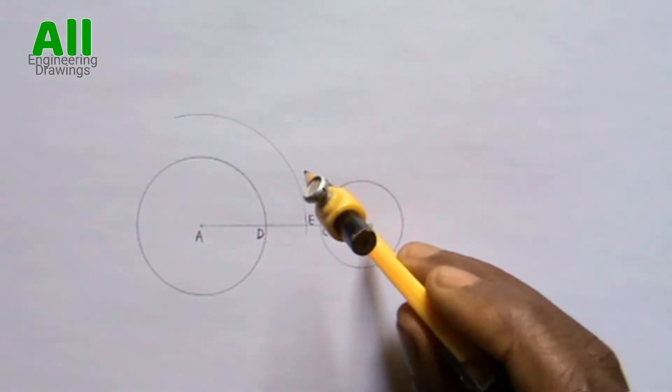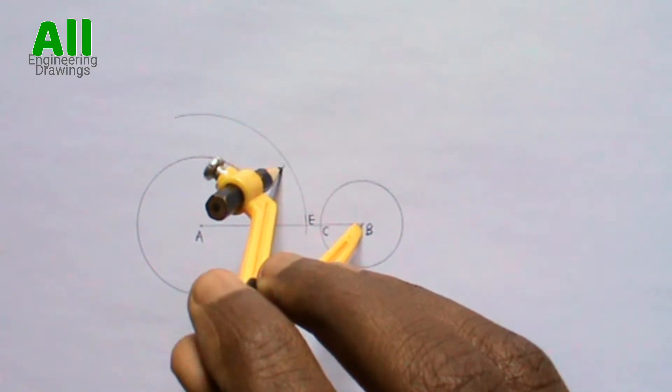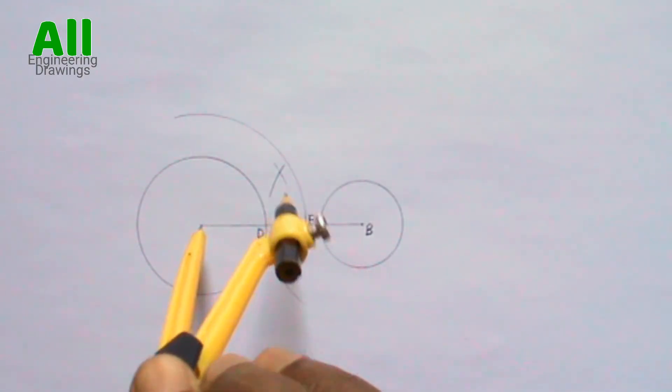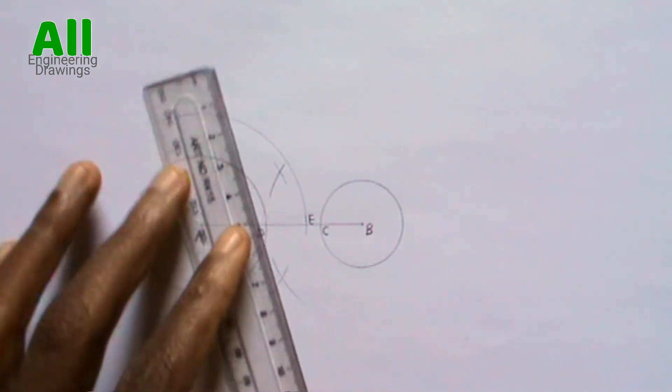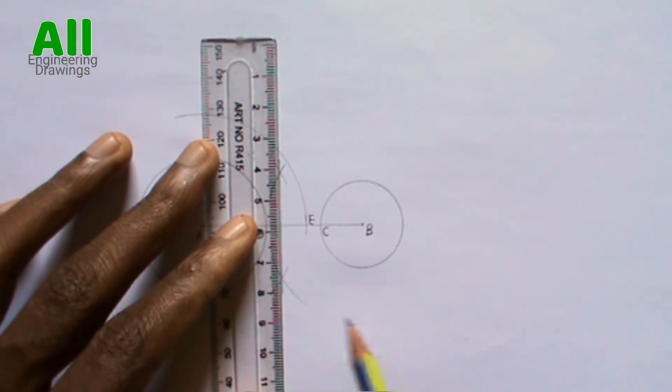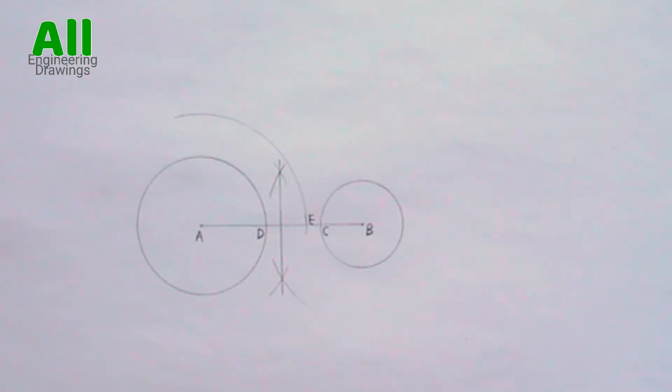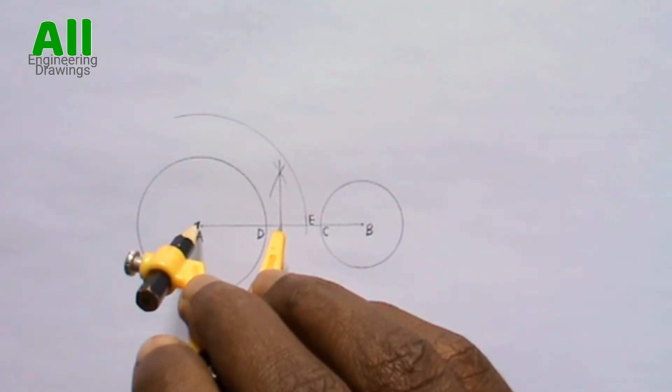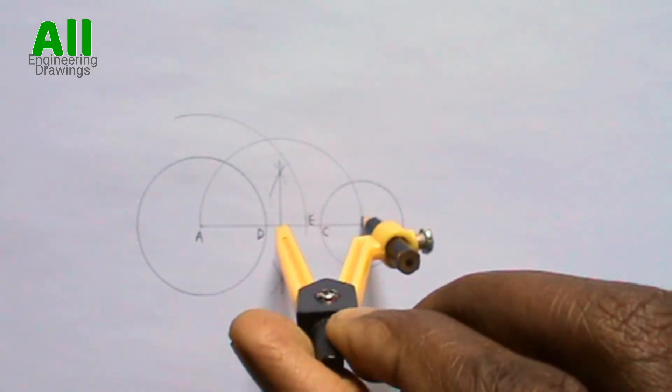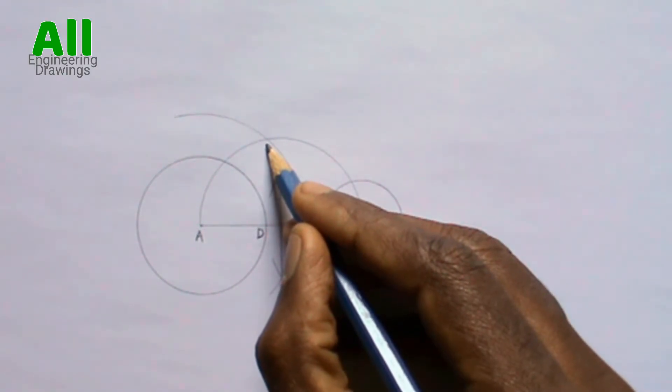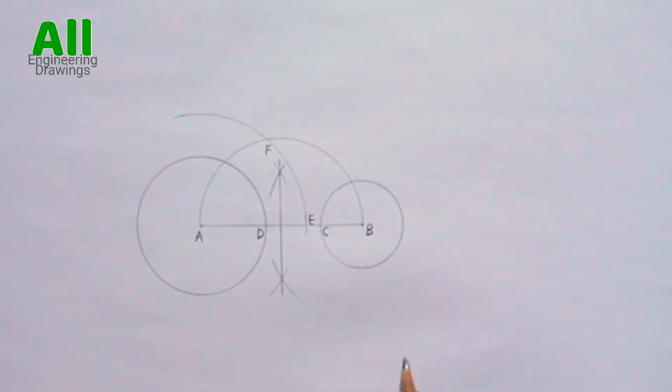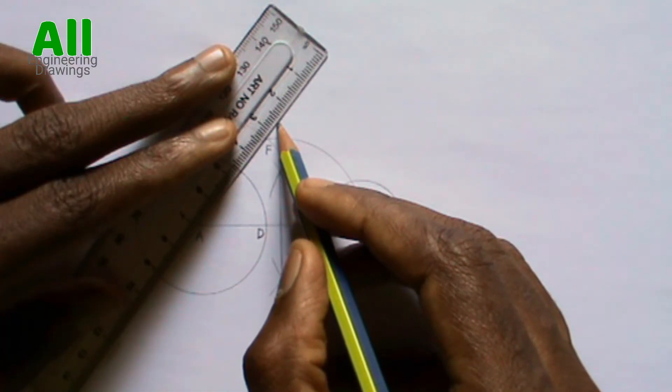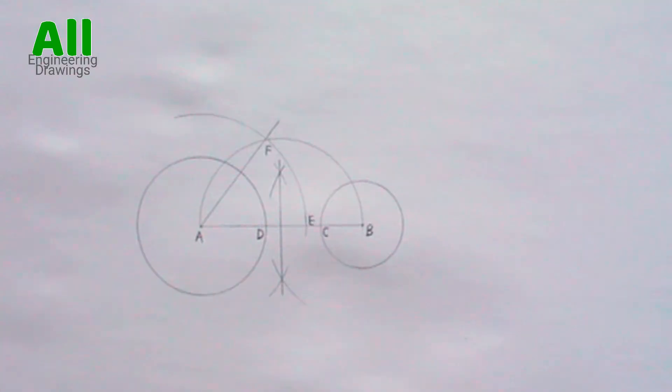Now bisect line AB. Label this point F. Now draw a line from point A passing through point F. Label this point G.